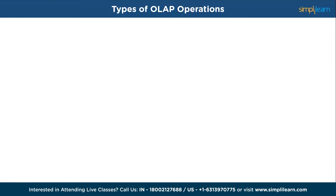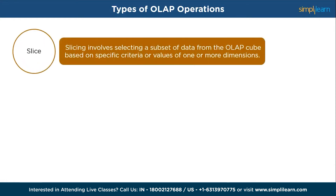OLAP systems offer various operations that allow users to analyze and manipulate data from different perspectives. First, slicing involves selecting a subset of data from the OLAP cube based on specific criteria or values of one or more dimensions. For example, you can slice the data to focus on sales figures for a specific city like New York, giving you a clear view of business performance in that city.